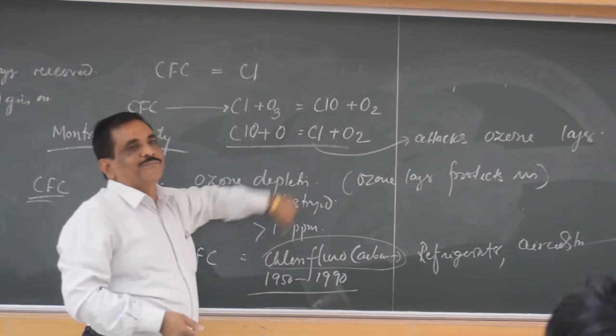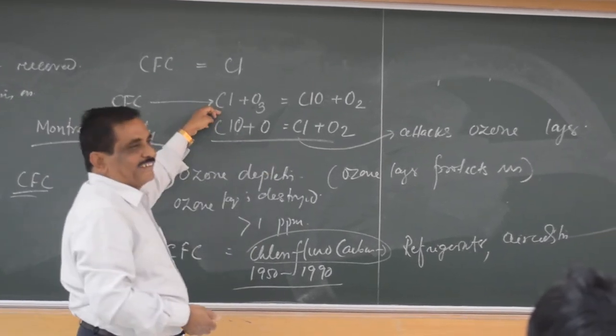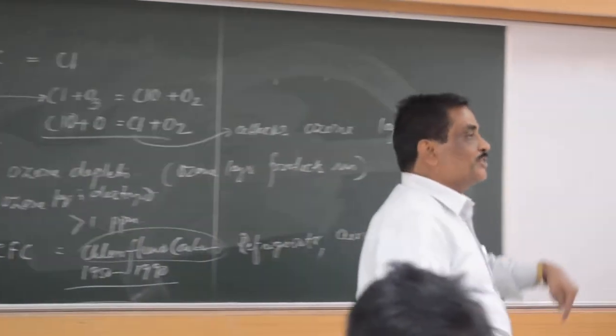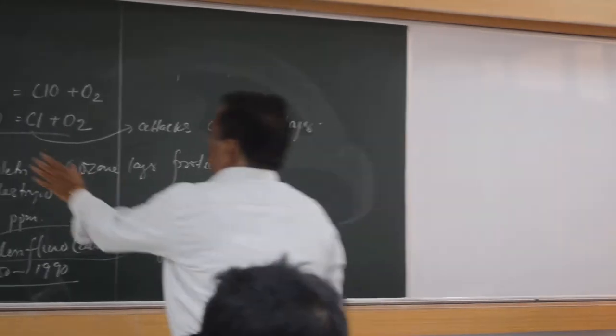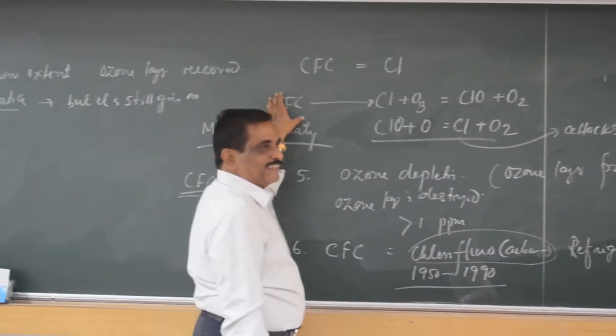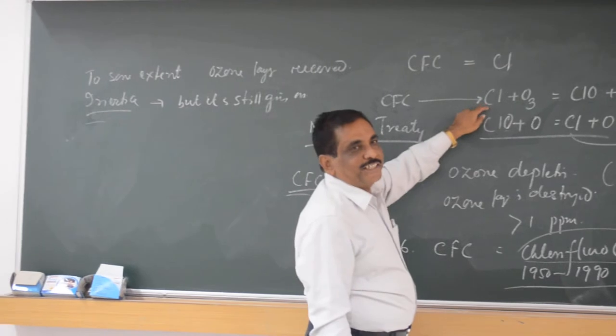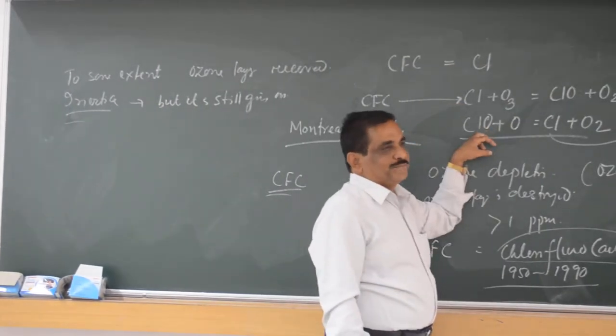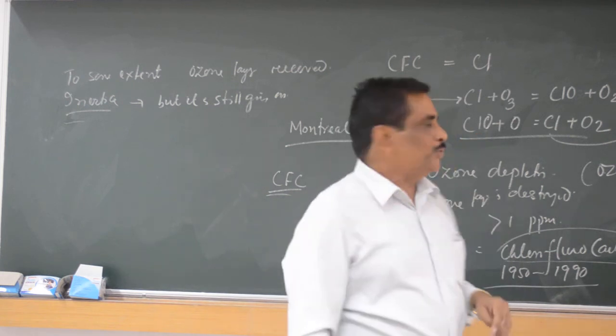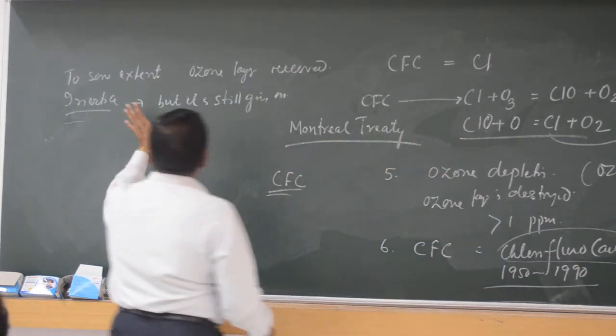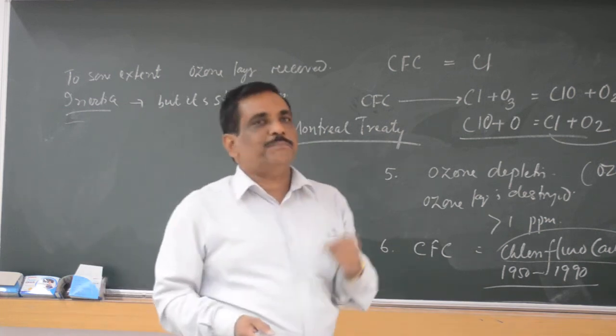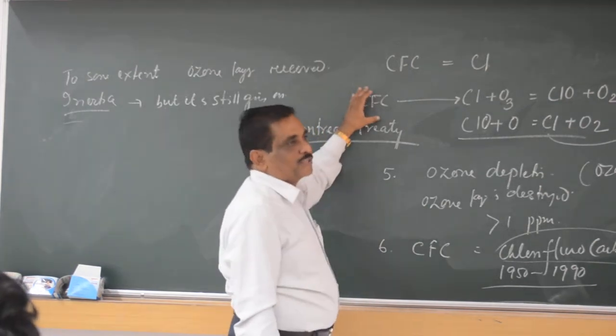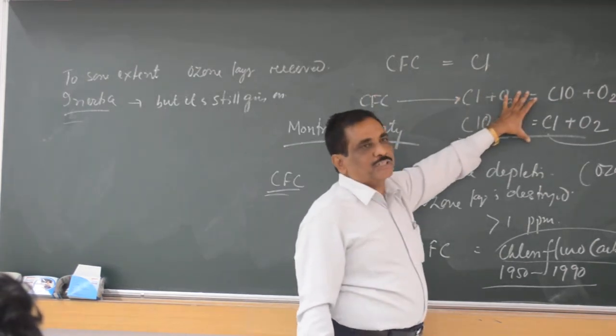So this chlorine will again join with ozone. You are not destroying the chlorine in the stratosphere. You are only stopping this. But this reaction, which started long time back in 1950, is still continued. So we are not sure whether the ozone layer has recovered fully or partly recovered, but definitely we have stopped this discharging process. This process we have stopped. But these equations or these reactions we have not stopped.